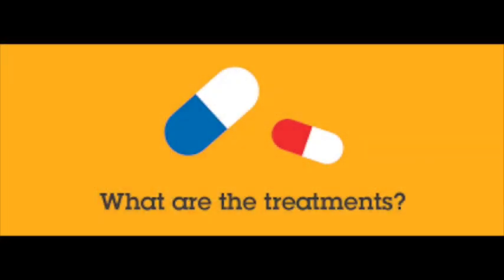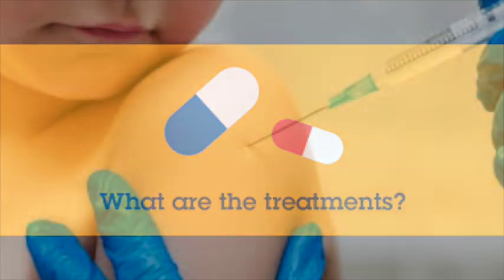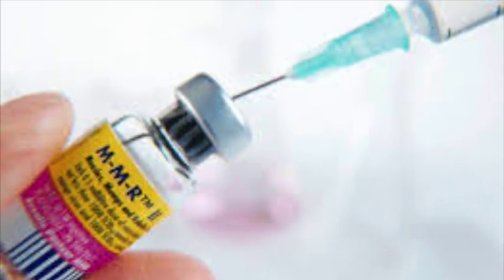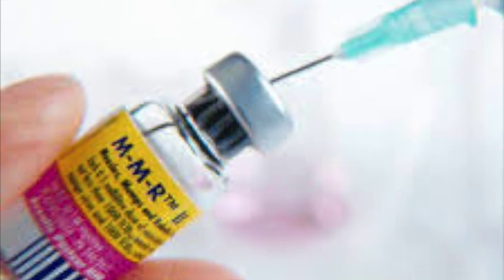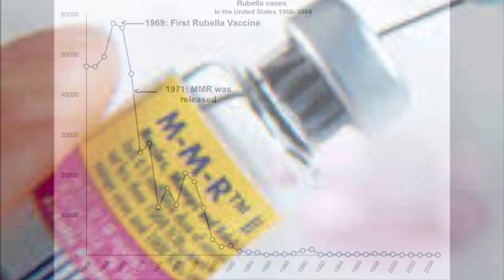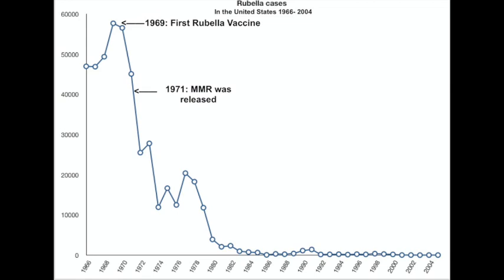While there is no specific treatment for the rubella virus, it is preventable through vaccination. The MMR vaccination is about 97% effective in protecting against the measles, mumps, and rubella. Due to the MMR vaccine, rubella was declared eliminated from the United States in 2004. Since 2012, only six babies have been reported being born with congenital rubella syndrome in the United States.